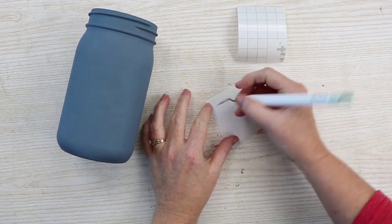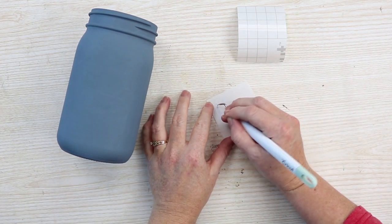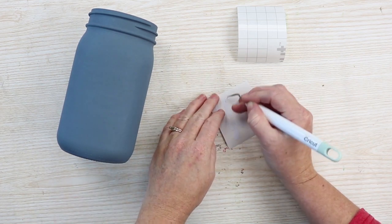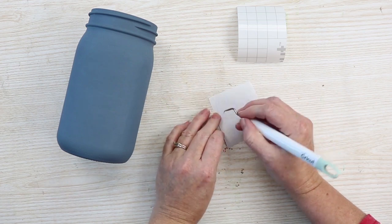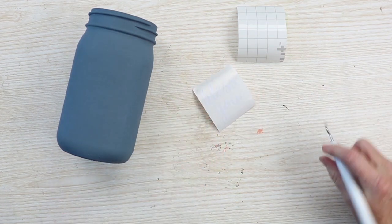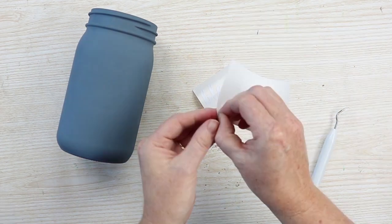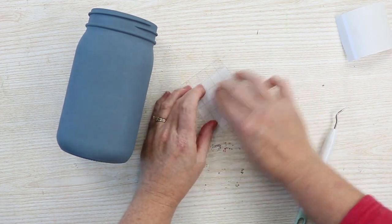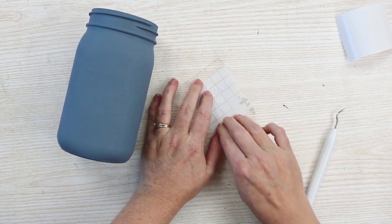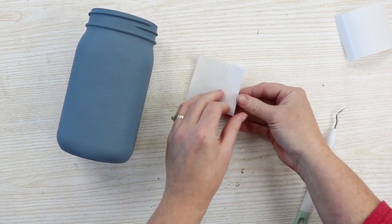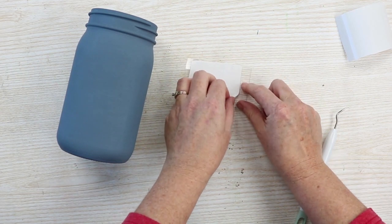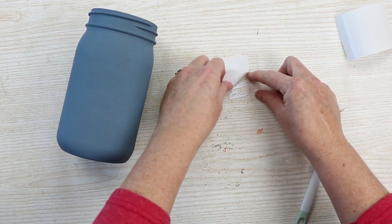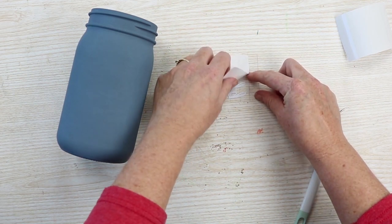I'm going to use transfer tape to move that from its backing paper to the mason jar itself. Once everything is weeded, I'll apply the transfer tape to the front of the design and press down well, then we will peel that backing away from the vinyl and the transfer tape. My number one tip is to peel the backing away from the vinyl and the transfer tape instead of the transfer tape away trying to pick up that vinyl. It makes it a little bit easier.